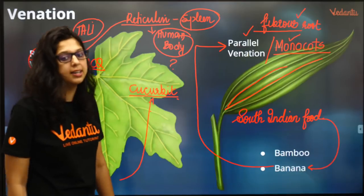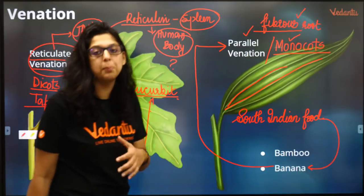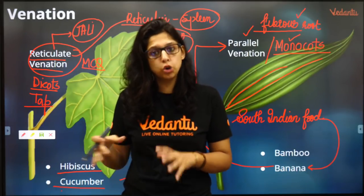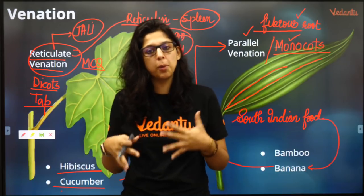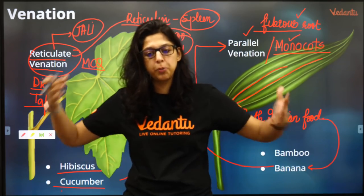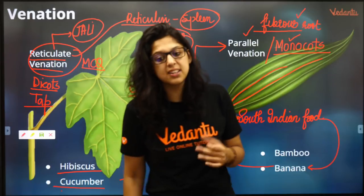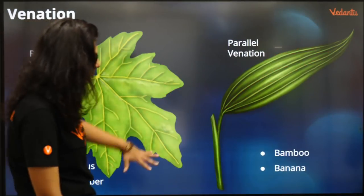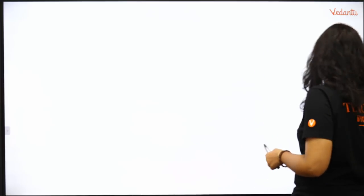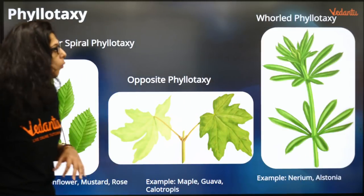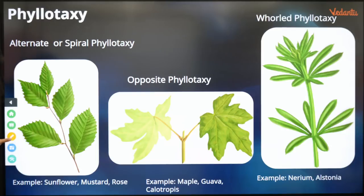Banana is a monocot. How do we propagate banana? Through rhizomatous suckers - rhizomes. So parallel and reticulate venation is clear. Now moving ahead to phyllotaxy in leaves - the arrangement of leaves on a stem is called phyllotaxy.